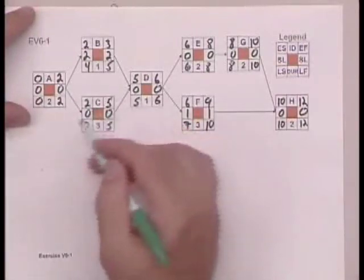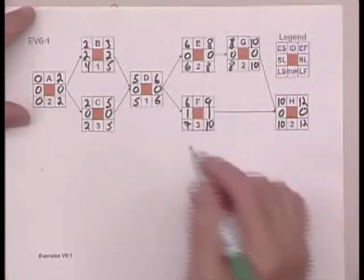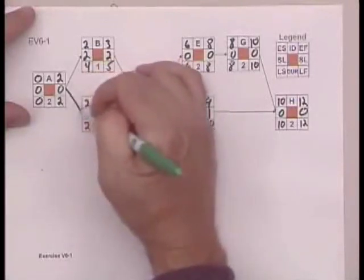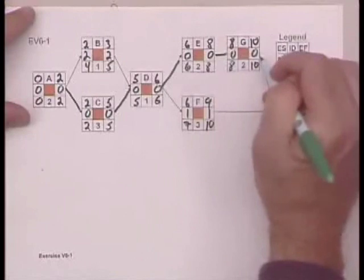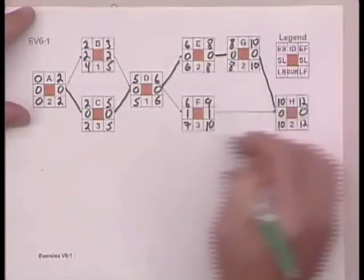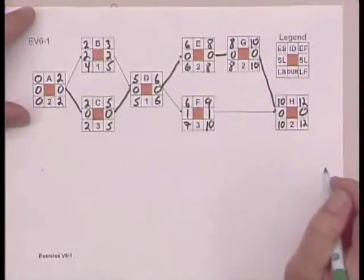And then we can track or trace the 0s to identify the critical path. A delay in any one of these activities would extend the duration of the project, assuming that all other activities go according to plan.